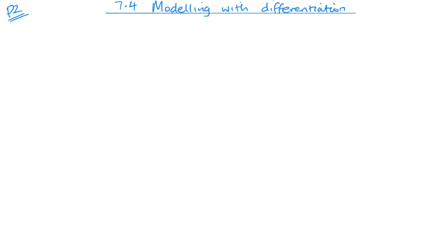Welcome to P2. Today we're looking at Modelling with Differentiation, Unit 7.4. This is all about rates of change. A lot of the questions you will have to get the rate of change from the question and understand what that means.